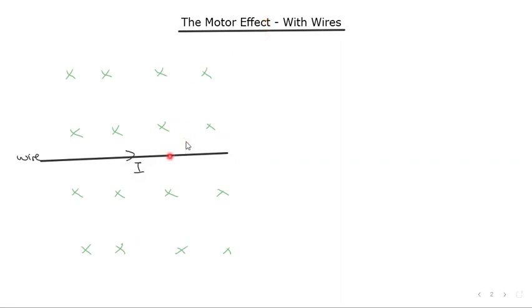So the motor effect is really something quite simple. It refers to the situation when you have a wire that is carrying a current, I for conventional current, in a magnetic field. So repeating that again, the conditions that you need are you need to have a current which is in a wire in a magnetic field.